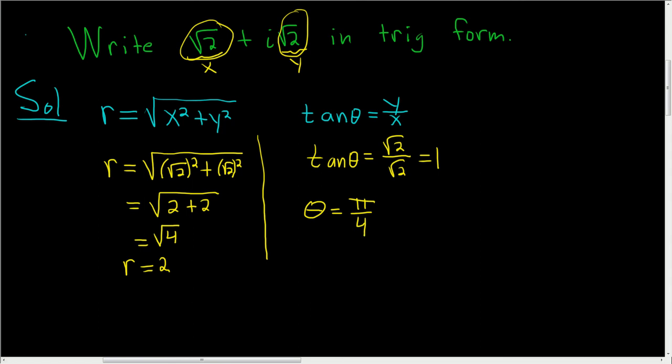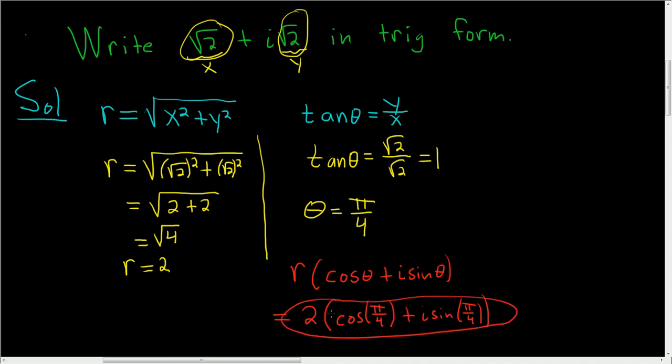So now we can go ahead and write the final answer down. The final answer has the form R cosine theta plus I sine theta. And so this is 2 parentheses cosine pi over 4 plus I sine pi over 4. And that's it. That's the trig form. I hope that made sense.